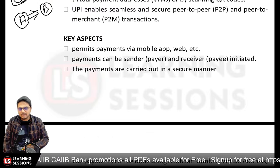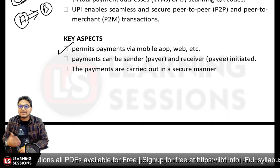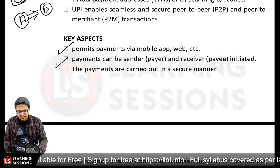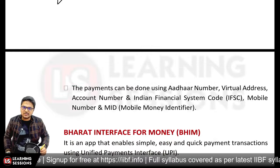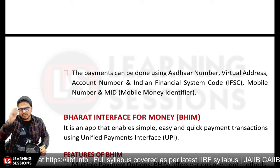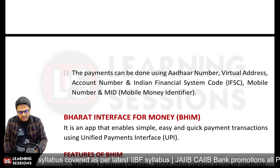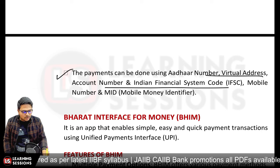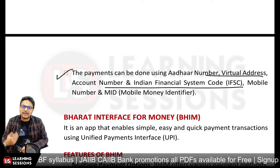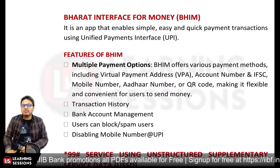UPI payments can be made through web or mobile applications. Payments are secured with a four- or six-digit unique PIN. Payment can be done using Aadhaar number, VPA, account number with IFSC code, or mobile number with MMID.